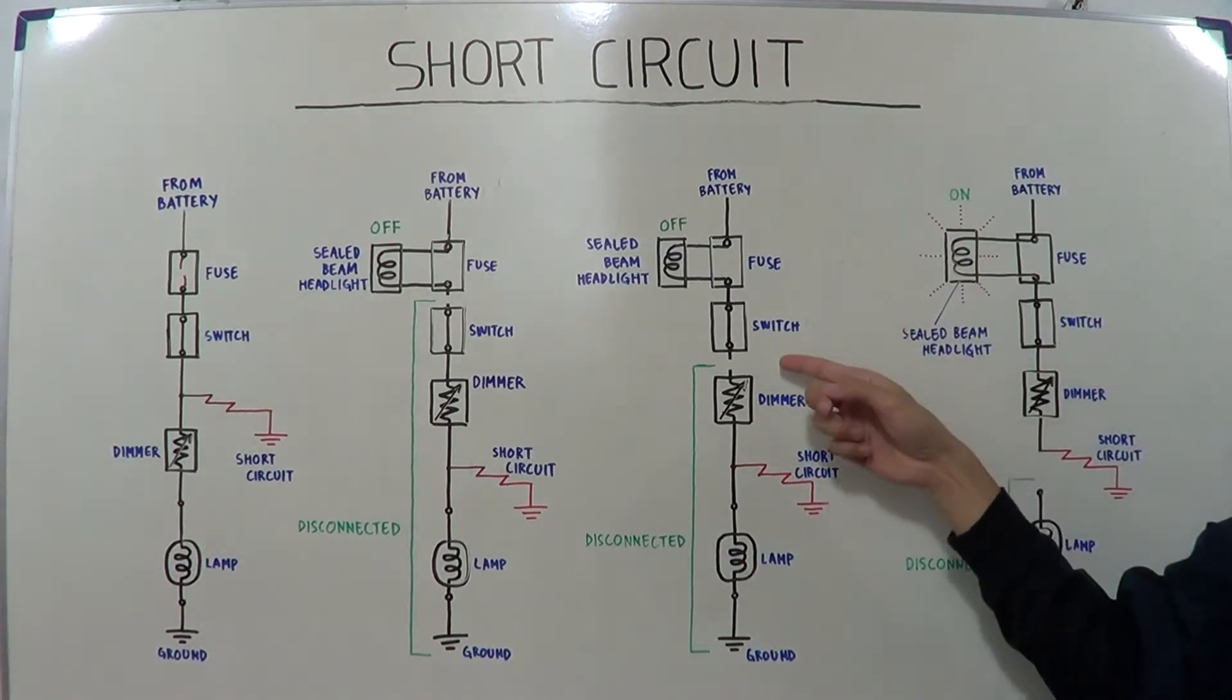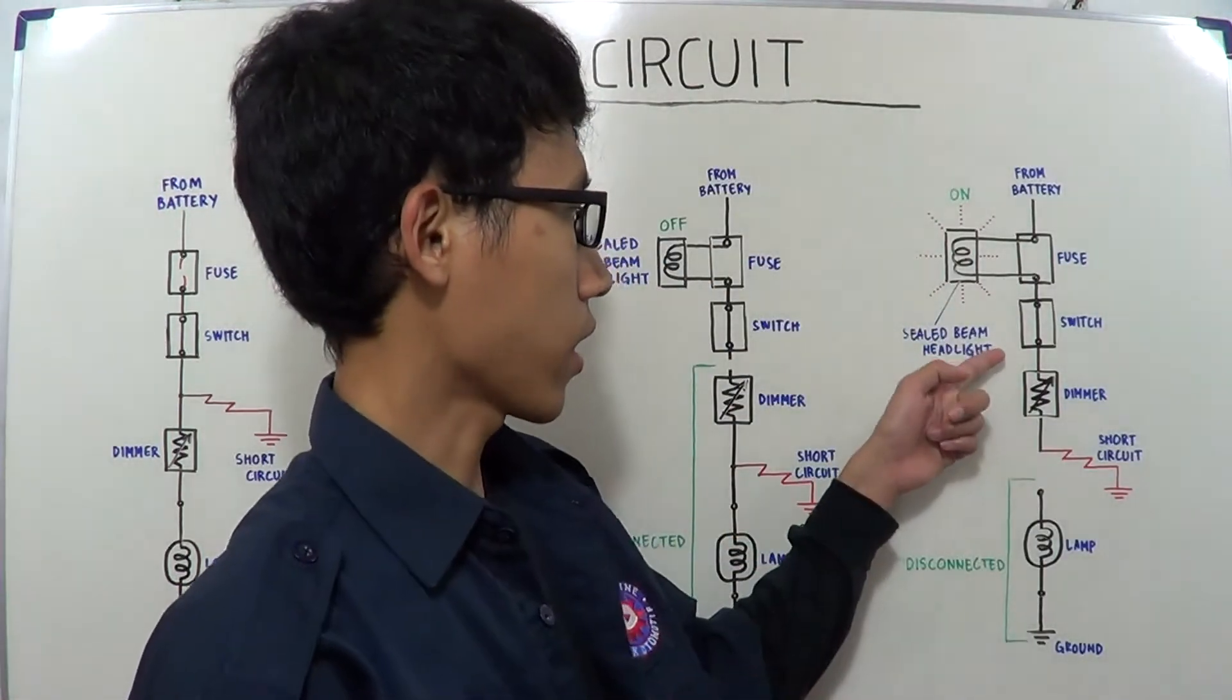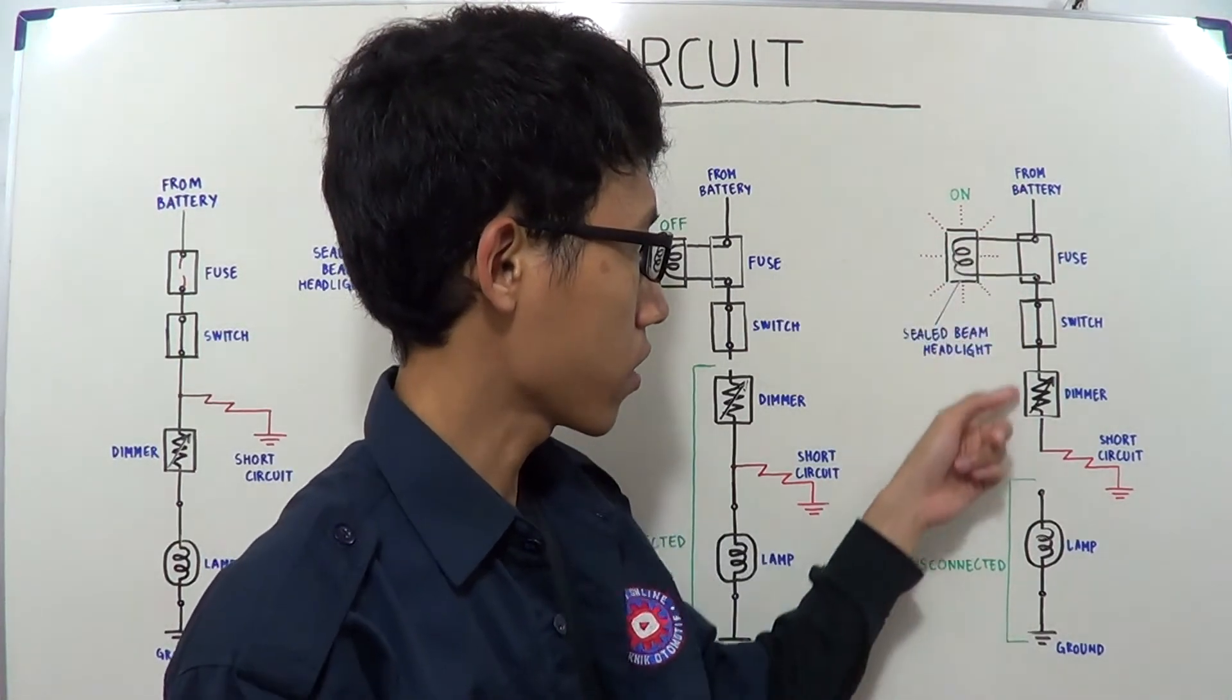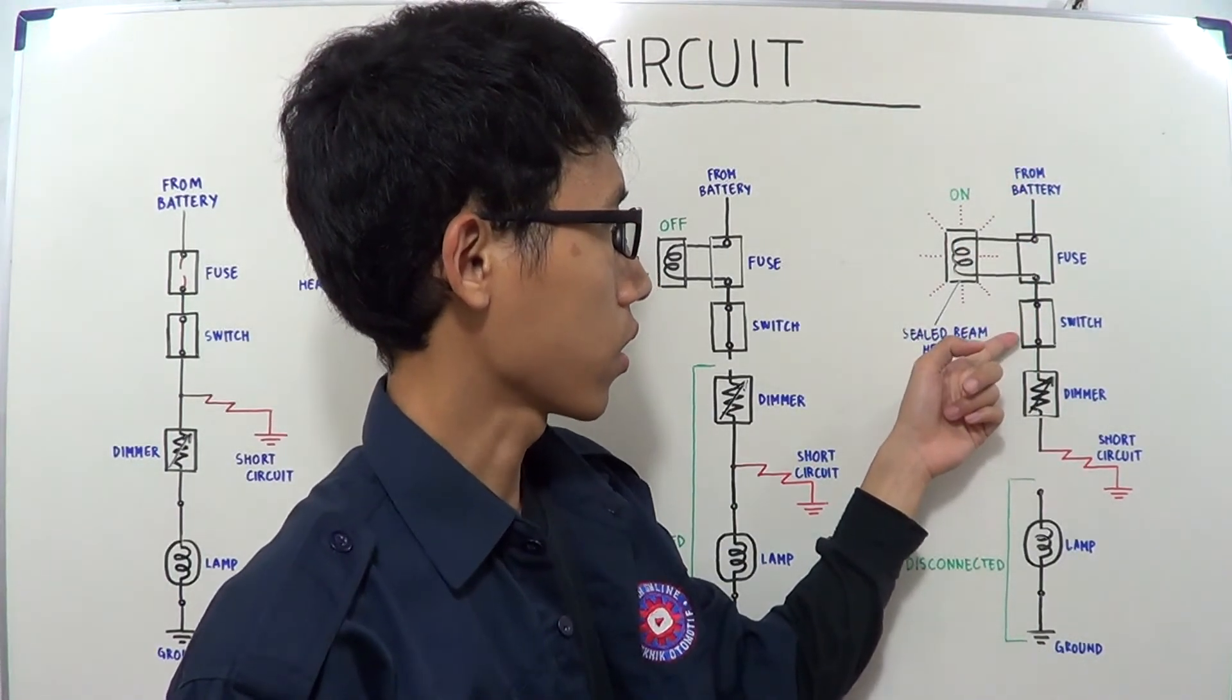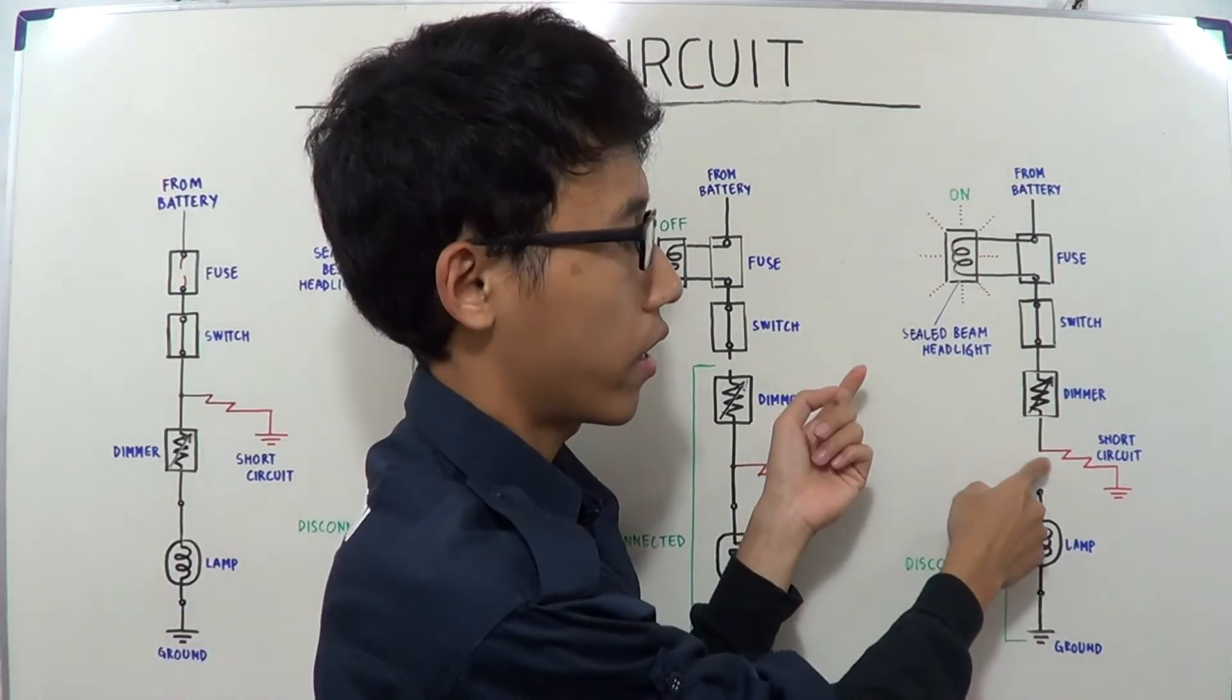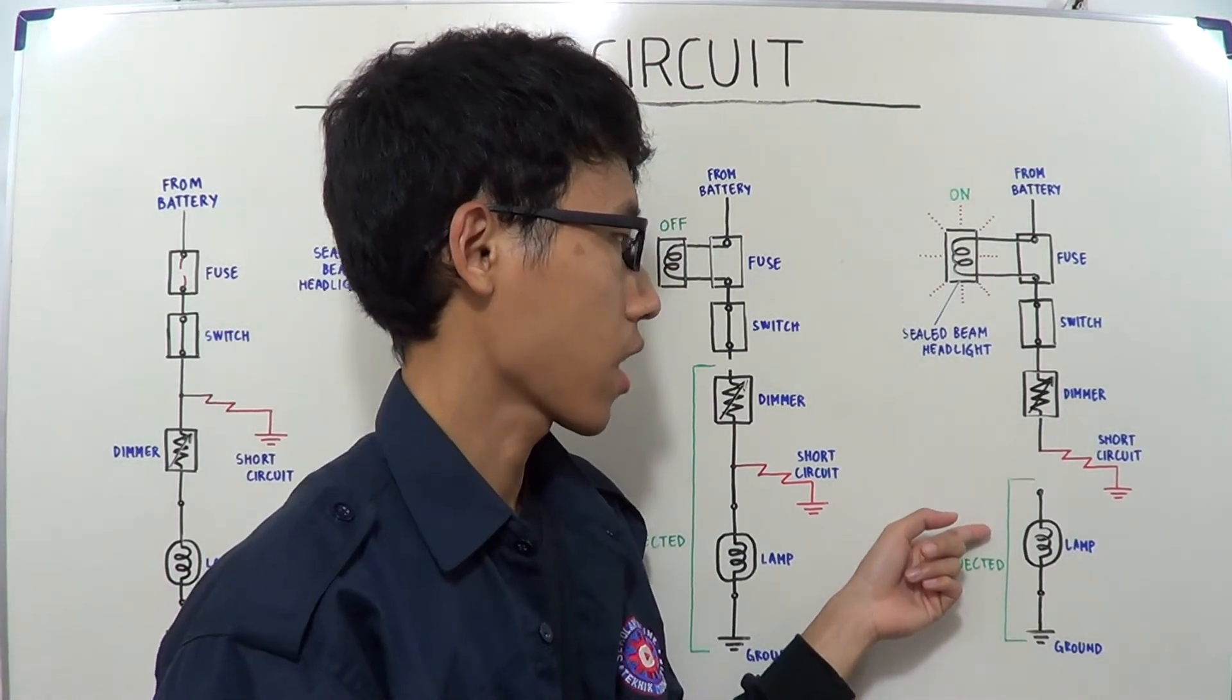Next, reconnect the second and third components and disconnect the third and fourth components. The system is still connected with electric current on standby from the battery. The switch is connected as before. If the headlight is turning on, there is a short circuit between the third and fourth components, the dimmer and the lamp. So that's how to locate a short circuit.